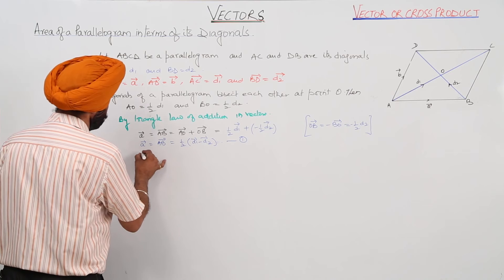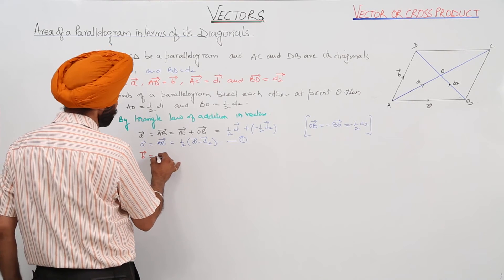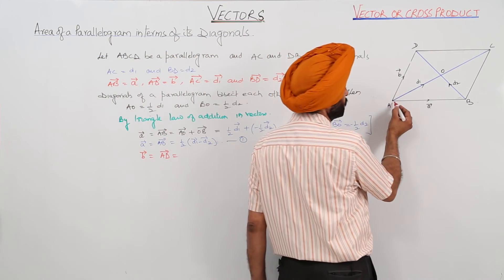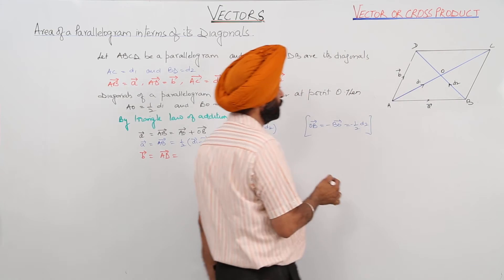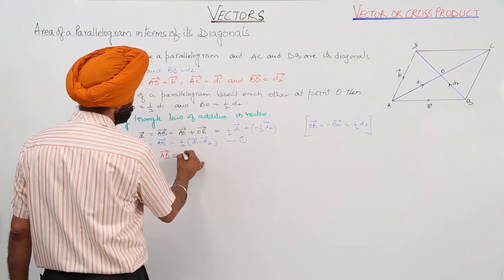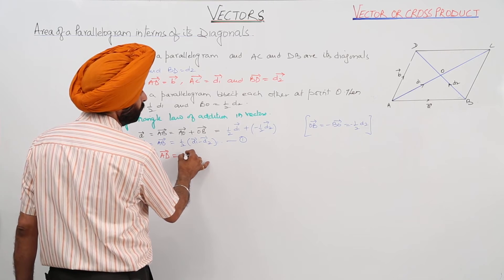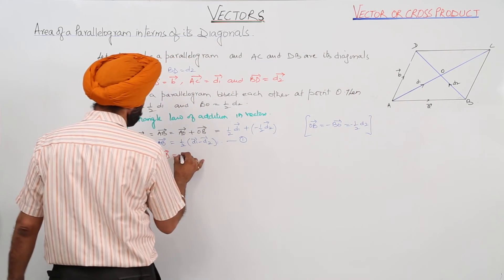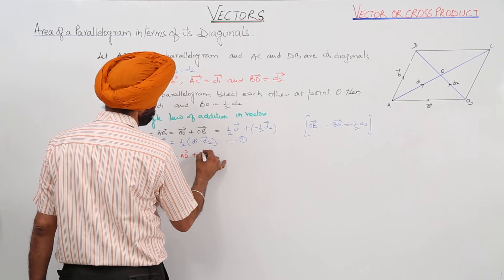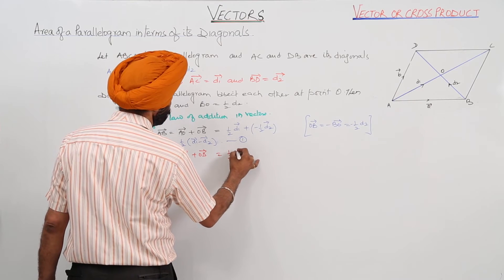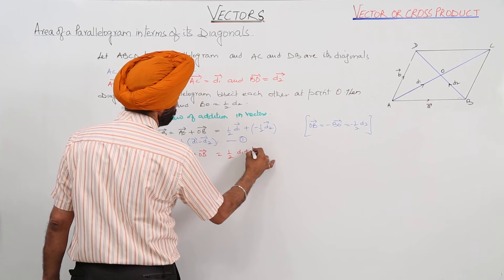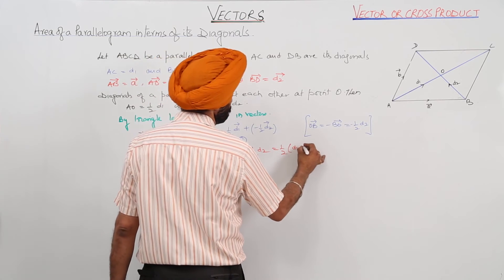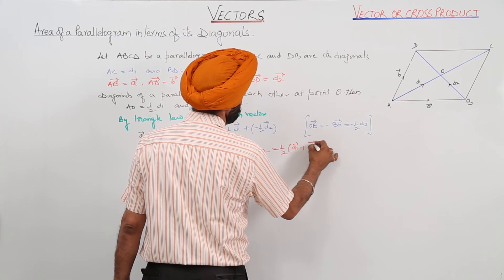Vector b equals vector AD. Using the triangle law in triangle AOD: vector AD equals vector AO plus vector OD. This equals half D1 plus vector OD, which equals half D1 plus half D2. Therefore, vector b equals half of vector D1 plus vector D2.